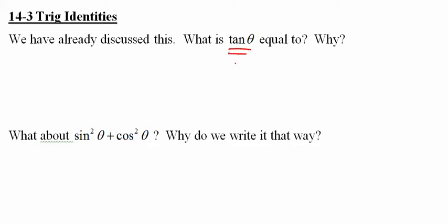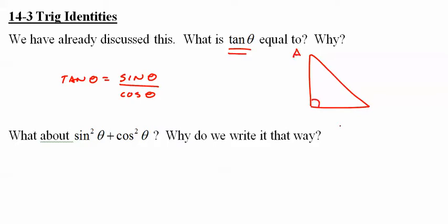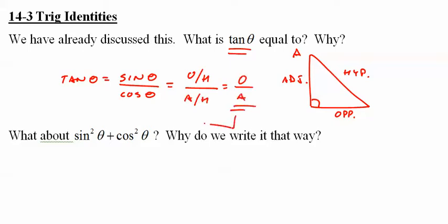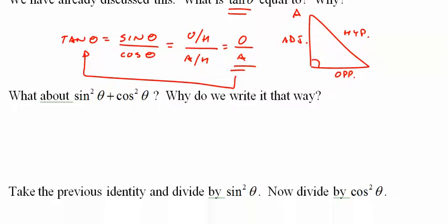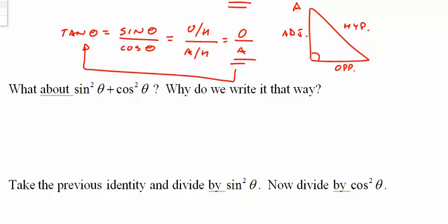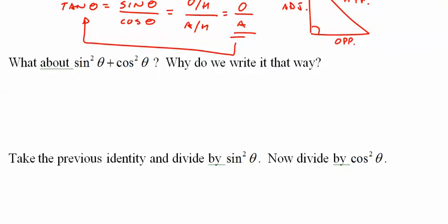What's tangent of theta equal to? You might remember: tangent of theta is equal to sine of theta over cosine of theta. If you pick an angle, the opposite side over the hypotenuse is sine, adjacent over hypotenuse is cosine, and dividing them gives opposite over adjacent — which is tangent. There are lots of different ways to prove it, but it's pretty obvious it's an identity. You need to memorize it: tangent equals sine over cosine.